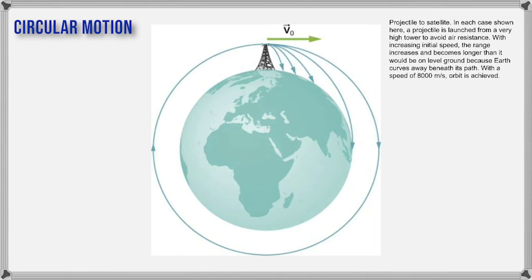We need to find what that minimum velocity is. That is the velocity of all satellites — the minimum velocity you have to give a satellite so it keeps revolving around the Earth. All satellites are continuously falling — true. But they are falling at the same rate as the curvature of the Earth, so the distance between the satellite and the Earth is maintained.